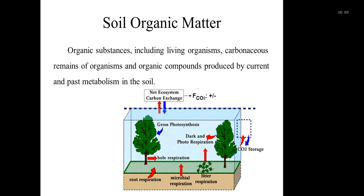The third soil property is soil organic matter. I'll give a brief introduction here and talk more in following chapters. Soil organic matter means the organic substance including living organisms, carbonaceous remains of organisms, and organic compounds produced by current and past metabolism in the soil. Soil organic matter must be carbonaceous and must be organic compounds in the soil.